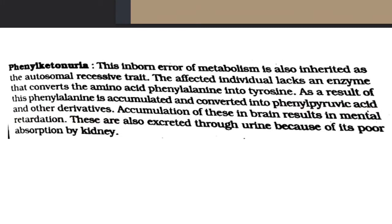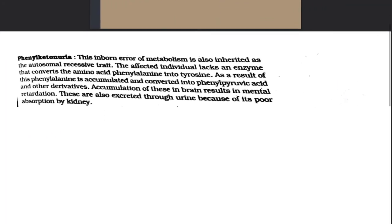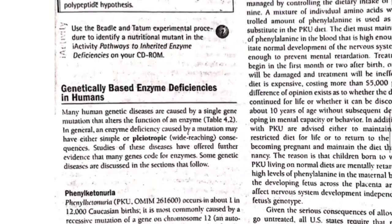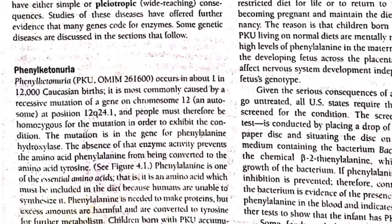Accumulation of phenylpyruvic acid in the brain results in mental retardation. These compounds are also excreted in urine due to their poor absorption by the kidneys. This condition is called phenylketonuria, or PKU.